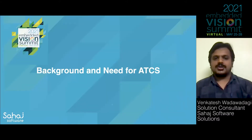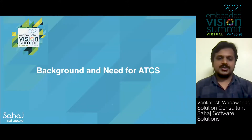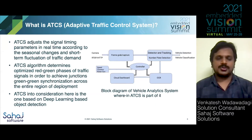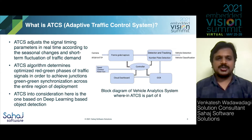First, let's understand what is ATCS, why do we need it and what are its benefits. An adaptive traffic control system is a system that adjusts the signal timing parameters in real time as per the seasonal changes and short-term fluctuations of traffic demand.